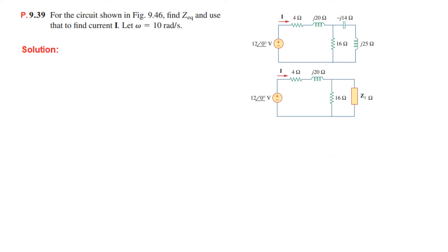We prefer to solve from right to left. You can see these two are in series, so we call them Z1. Z1 is the summation of -j14 and +j25, so minus j14 plus j25 equals j11.